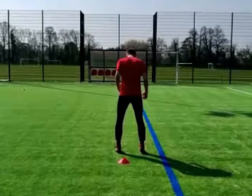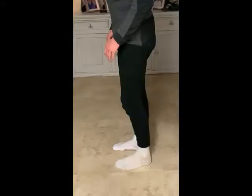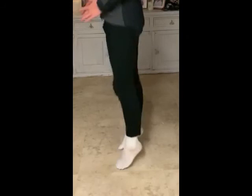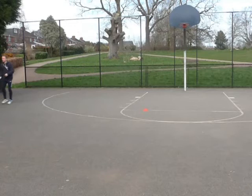Assessing his lateral shuffles and cross step in isolation, you can see that he lacks ankle stiffness as he plants the outside foot, as he spends a lot of time on the floor and uses that leg to drive the majority of the cross step, but he doesn't even finish in an effective acceleration position to apply the horizontal forces. This is further supported by looking at the height of his pogos and the ground contact time. The implications to training were quite straightforward: including plyometrics and ballistic jumps in this player's ongoing gym sessions gave him frequent exposure to developing stiffness and the stretch shortening cycle, especially around the ankle complex, which was a primary objective of this player's project. We then gradually started integrating foundational skills — the lateral shuffle and the cross step — to develop these movement strategies, and then exposed him to more decision making within a more chaotic environment with the required capacity to perform the turn.